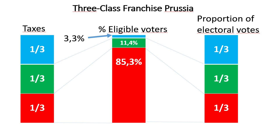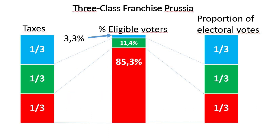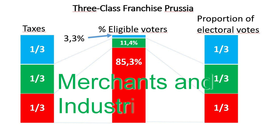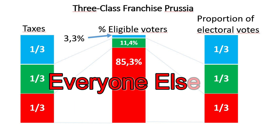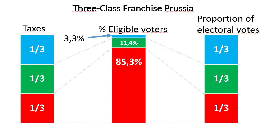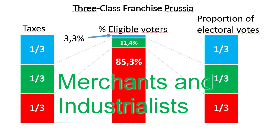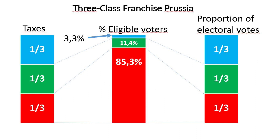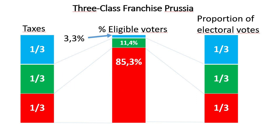In Prussia there was even a three-class electoral system. The first class consisted of large landowners and aristocrats who paid a particularly high amount of taxes, until one third of the tax revenue was paid. The second class consisted of merchants and industrialists who paid the most taxes until another third was paid. And the third class consisted of everyone below that level. Each class elected an identical number of electors, who then elected the members of the House of Representatives of Prussia. In 1898, the first class included 3.3% of those eligible to vote, the second class 11.4%, and the last class 85.3%. That this electoral law favored the Conservatives is obvious.